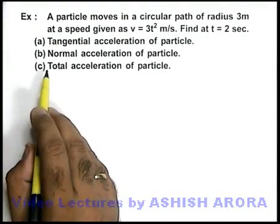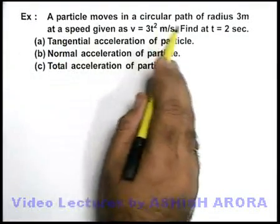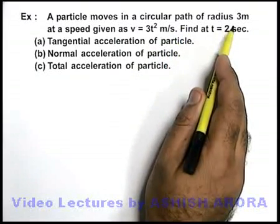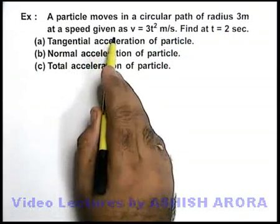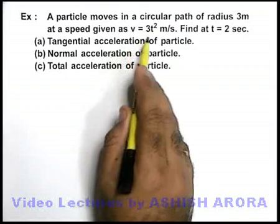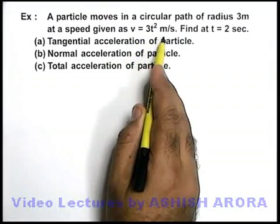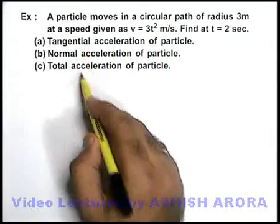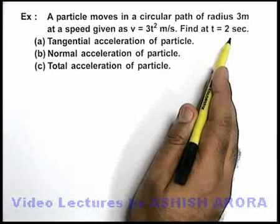In this example, we are given that a particle moves on a circular path of radius 3 meters at a given speed v equal to 3t² meters per second, and we are required to find some parameters at t equal to 2 seconds.